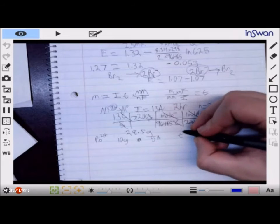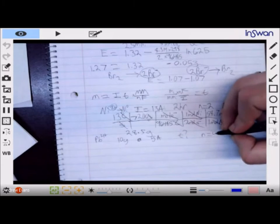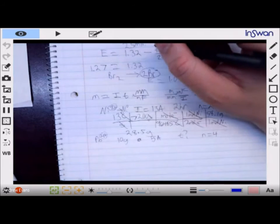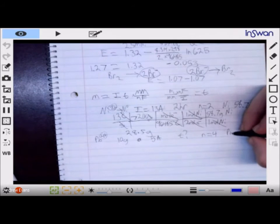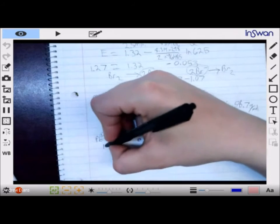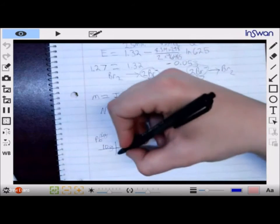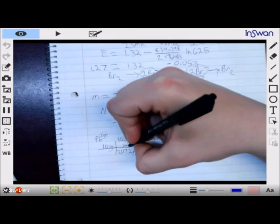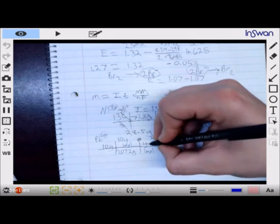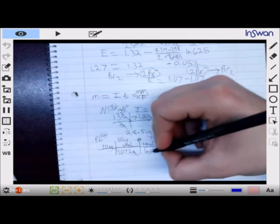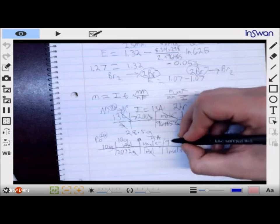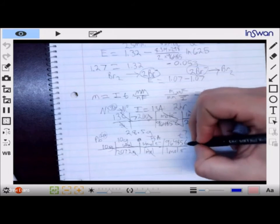Well, in this case, our N is 4, because we have to go from 4 plus to 0. Our molar mass of lead is 207.2. We're arranging that. So, if I want 10 grams, we have 207.2 grams per one mole. In one mole, we need four moles of electrons. For every one mole of electron, that has a coulombic charge of 96,485 coulombs.